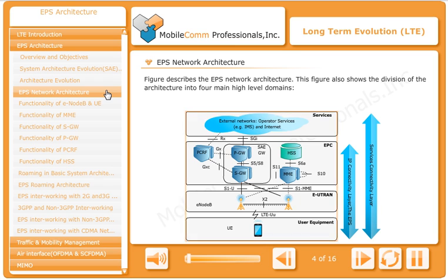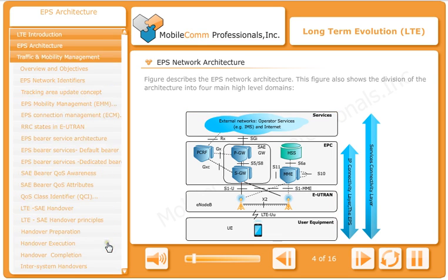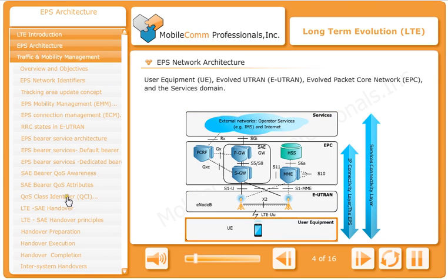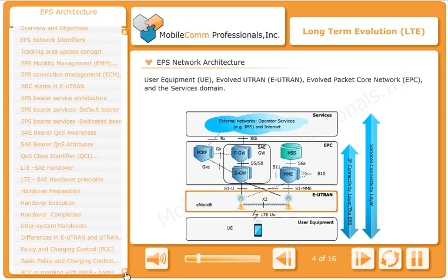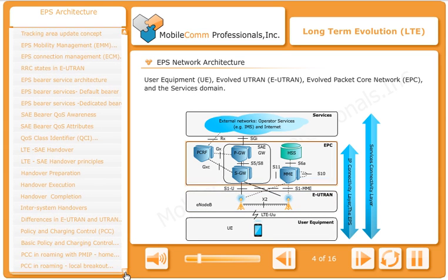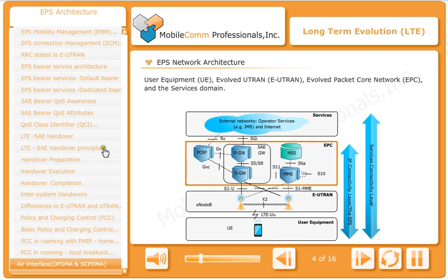This figure describes the EPS network architecture, showing the division of the architecture into four main high-level domains: User Equipment (UE), Evolved E-UTRAN, Evolved Packet Core Network (EPC), and the Services Domain.